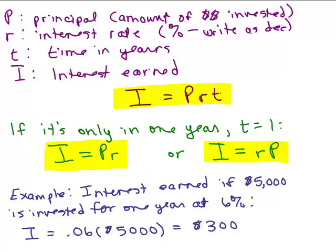If we're only talking about one year as in this problem, then you would be putting in one for T and that would just give you the formula I equals PR, or I equals RP. I like to switch that around instead of writing P times R, I like to think of it as R times P. It doesn't really matter though.